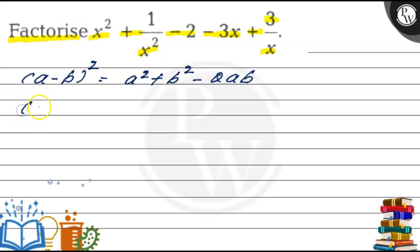Let us check what we will get. (x - 1/x)² equals x² + 1/x² - 2. Now in the place of x² + 1/x² - 2 we can write (x - 1/x)².